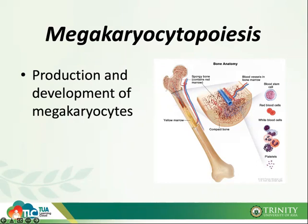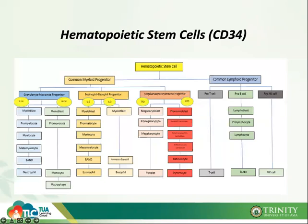Megakaryocytopoesis happens in your bone marrow, just like hematopoesis. Let's have a quick review. You're seeing a diagram of the hematopoietic stem cell — your pluripotent stem cell. During Hematology 1, you already talked about leukocytopoesis, leukopoesis, and erythropoiesis.